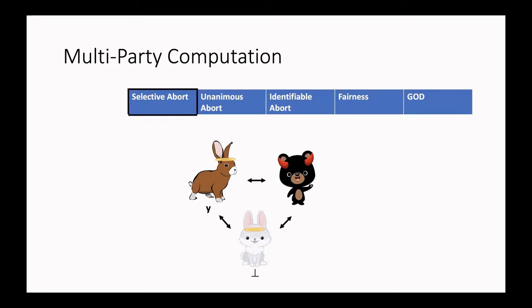The weakest notion we can consider is the one of selective abort, which says that if the adversary aborts, some honest party may abort while some other honest party may learn the output of the computation. It is important to notice that even when the adversary aborts, he can still retrieve the output of the computation. The next notion, which is the one of unanimous abort — stronger than selective abort — says that when the adversary aborts, all honest parties will unanimously abort.